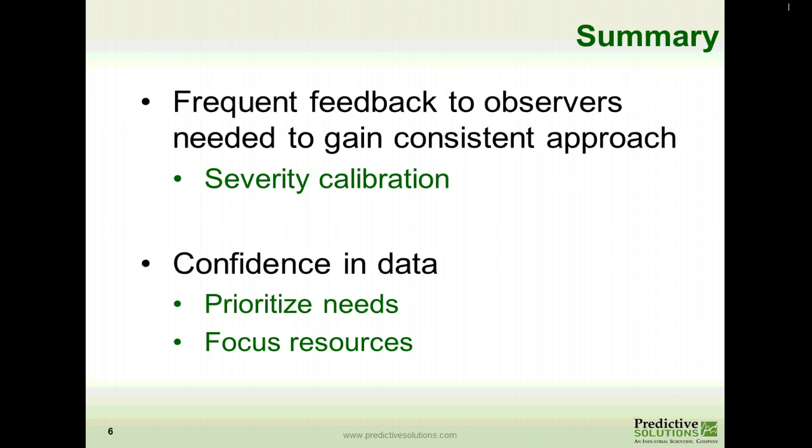Frequent feedback to observers is needed to gain a consistent approach as it relates to assigning the severity value. The best way to do that is to do a severity calibration — look at what's been entered in Safety Net, do the calculation based on consequence and likelihood, see if those two differ, and give feedback to the individual inspector based on what was found. This is necessary because everybody looks at risk differently. Once everybody starts assigning severity the same way, we will gain confidence in the data, which will allow us to prioritize our needs and focus our resources where they are needed the most.